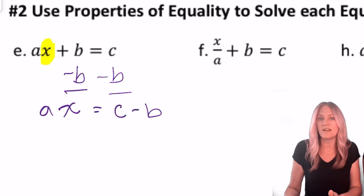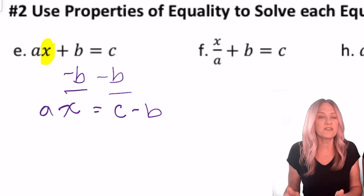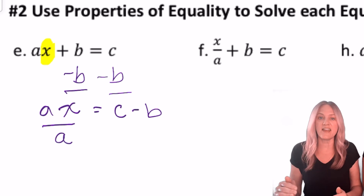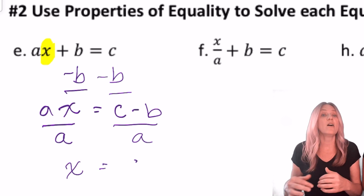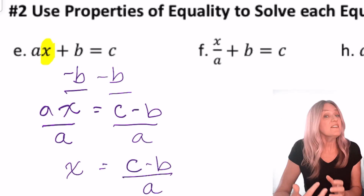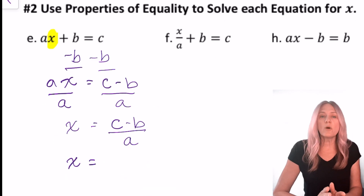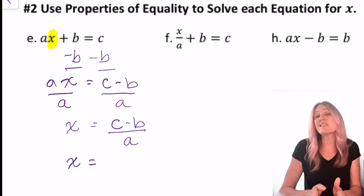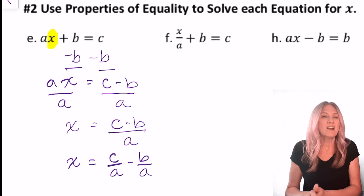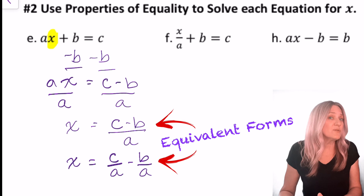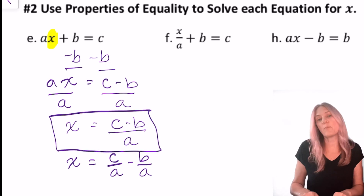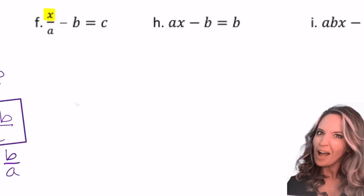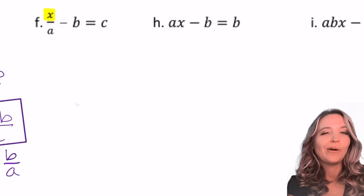Now I'm left with a times x equals c minus b. Next, undo multiply or divide: divide both sides by a. x equals c minus b all divided by a. If needed, we could separate this into two fractions: x equals c over a minus b over a. There's no need to do this unless there's a good reason, but it's important to recognize that mathematically those are the same expressions.